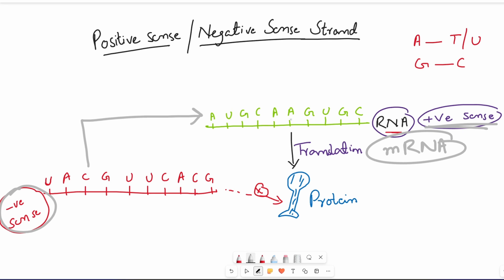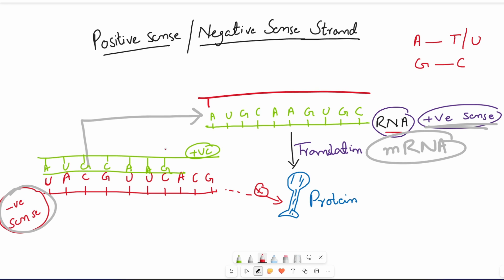The negative sense strand must be converted into positive sense RNA. It must be converted by making a complementary copy in front of it. For example, in front of U there will be A, in front of C there will be G, in front of G there will be C, and so on. The resulting sequence is exactly the same as the original positive sense strand. So making a complementary copy of a negative sense strand converts it to positive sense, and vice versa.